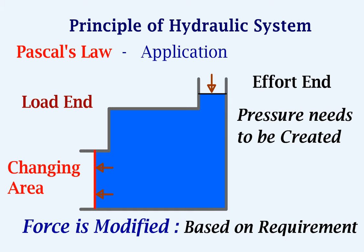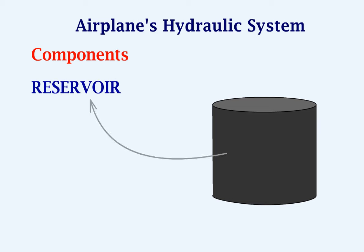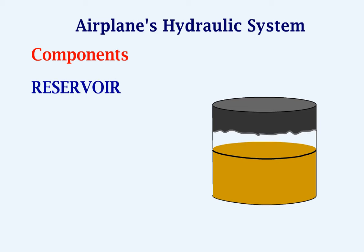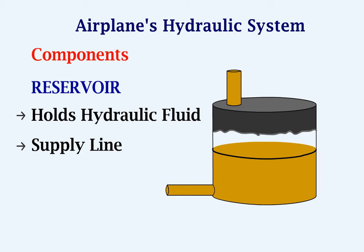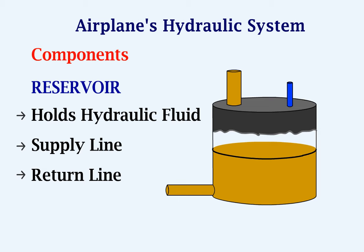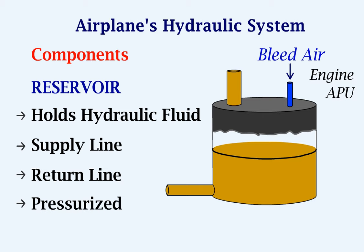With this principle, now let's look at the airplane's hydraulic system by going through the components that form the system. Every hydraulic system should have a reservoir. The reservoir holds the hydraulic fluid which is needed for the system. This is the supply line which supplies the required fluid. This is the return line in which the fluid comes back to the reservoir. The reservoir may be pressurized so that a positive flow is maintained on the supply line. The pressurization can be done by taking bleed air from the engine or the APU.